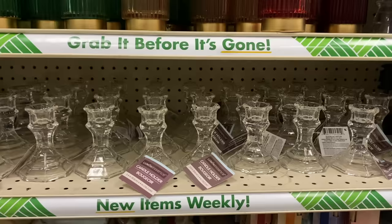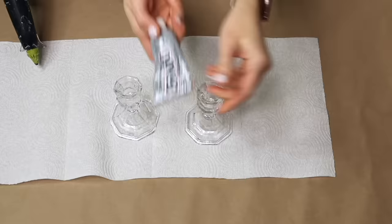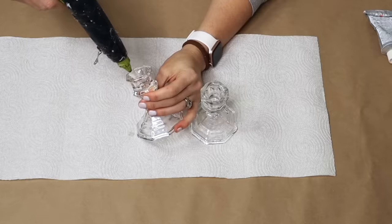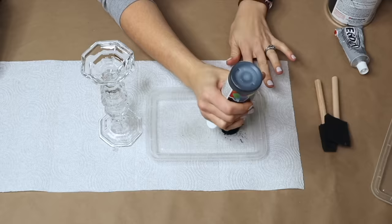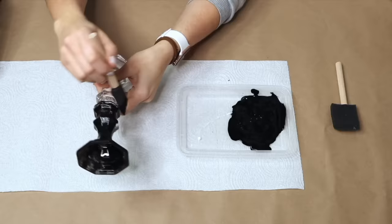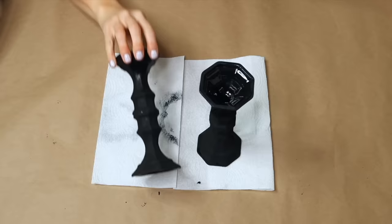I'm taking three hexagon decorative mirrors and four small glass candlesticks from Dollar Tree. Stack two candlesticks on top of one another. When the glue has dried, I'm taking some black acrylic craft paint. Apply the paint all over each candlestick column.